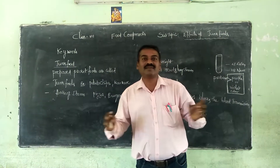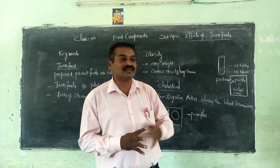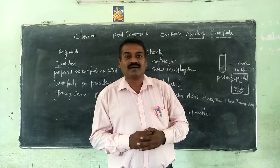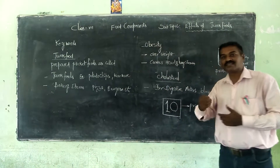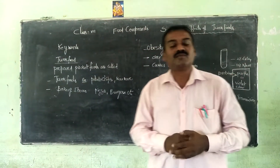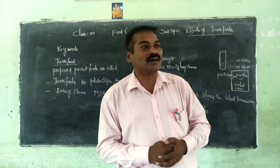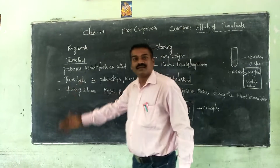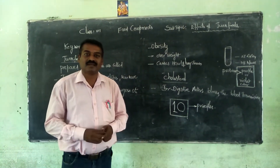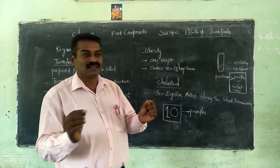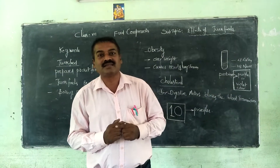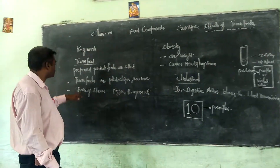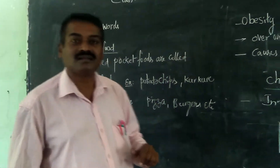During vacations like Saturdays and Sundays, most families along with their children visit movies or big shopping malls, and by that time we purchase different kinds of food varieties. Junk food is nothing but pre-prepared packaged food material — for example, kurkure packets, potato chips, and bakery items such as pizza and burgers.